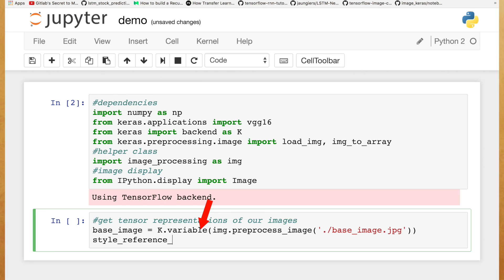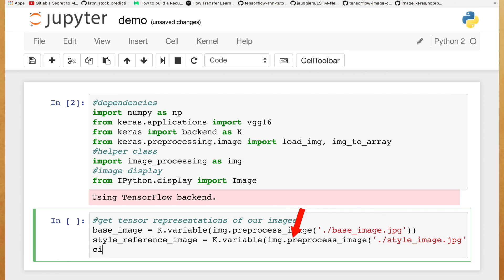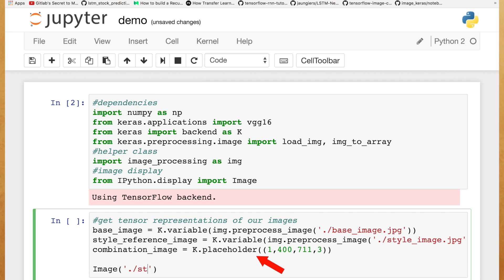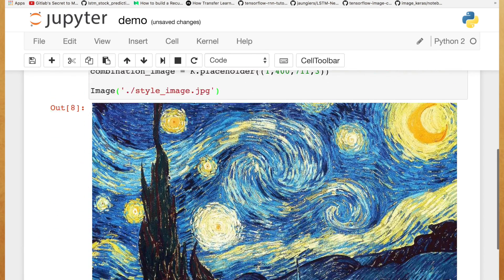The variable function from Keras' backend, TensorFlow, is equivalent to the tf.variable. The parameter will be the image converted to an array. Then, we'll do the same for the style image, and we'll create a combination image where we can later store our end result. We'll use a placeholder to initialize it with a given width and height. Let's see if we successfully loaded our images. Yup, this checks out.